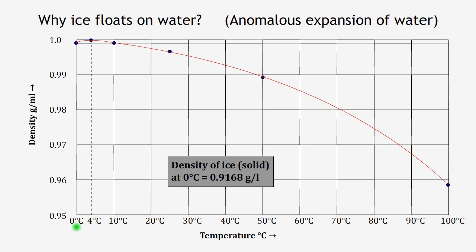From 4 degrees centigrade to 0 degrees centigrade, water actually expands, which is just the opposite of what is expected. Therefore, it is called anomalous expansion of water.